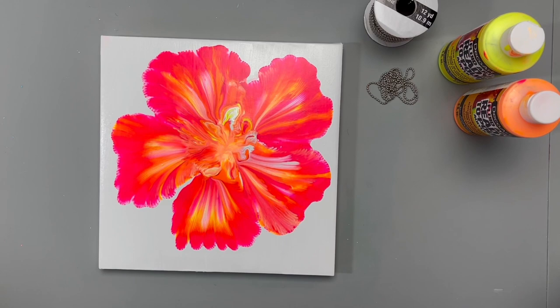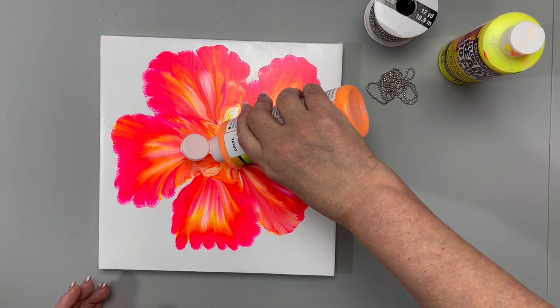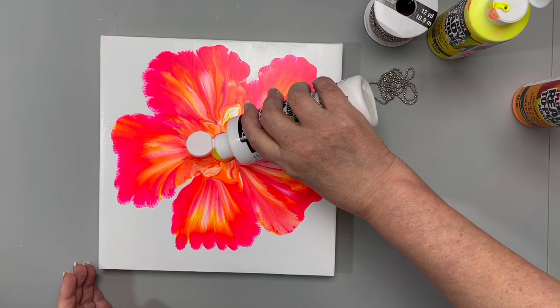Okay, so the funky fun neon flower is completely dry. And all I'm going to do is pour right into the center. I'll start with the pink, a little bit of orange, some of the yellow neon, and then finally finish it with white.